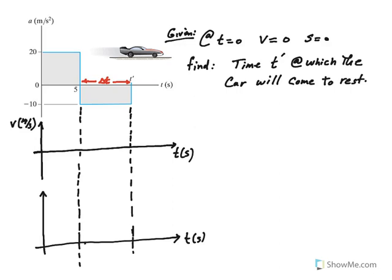Sometimes the acceleration is given graphically or velocity is given graphically. In this example, we have a car that is traveling with a given acceleration diagram. The acceleration is a constant 20 meters per second squared for 5 seconds, and then it decelerates at the rate of half as much, negative 10 meters per second squared over an unknown interval of time delta t from 5 to t prime.